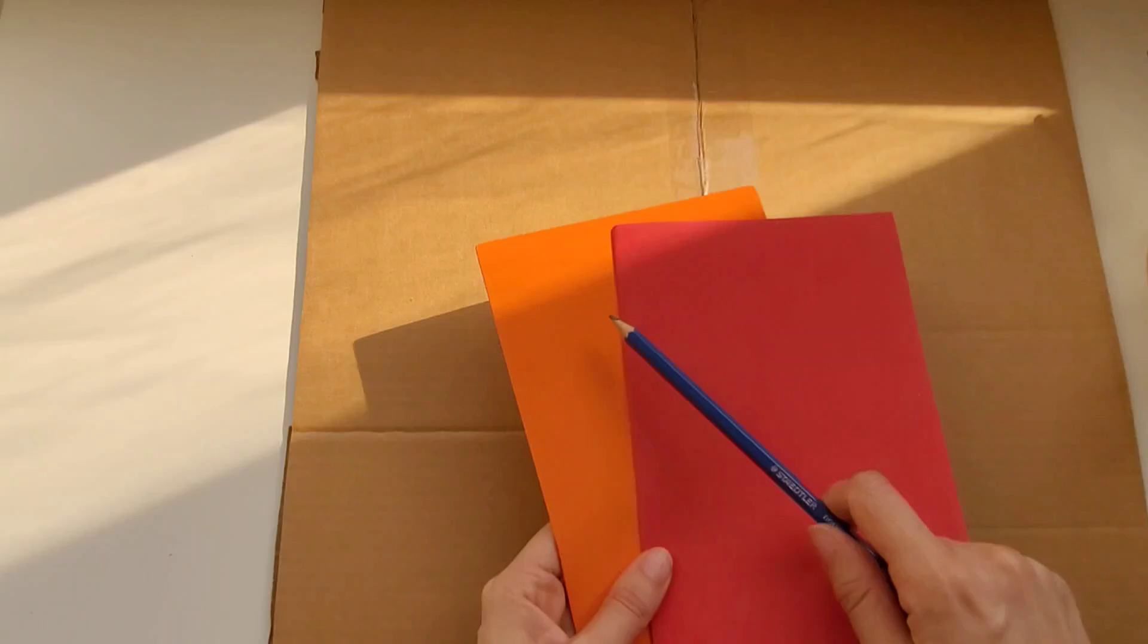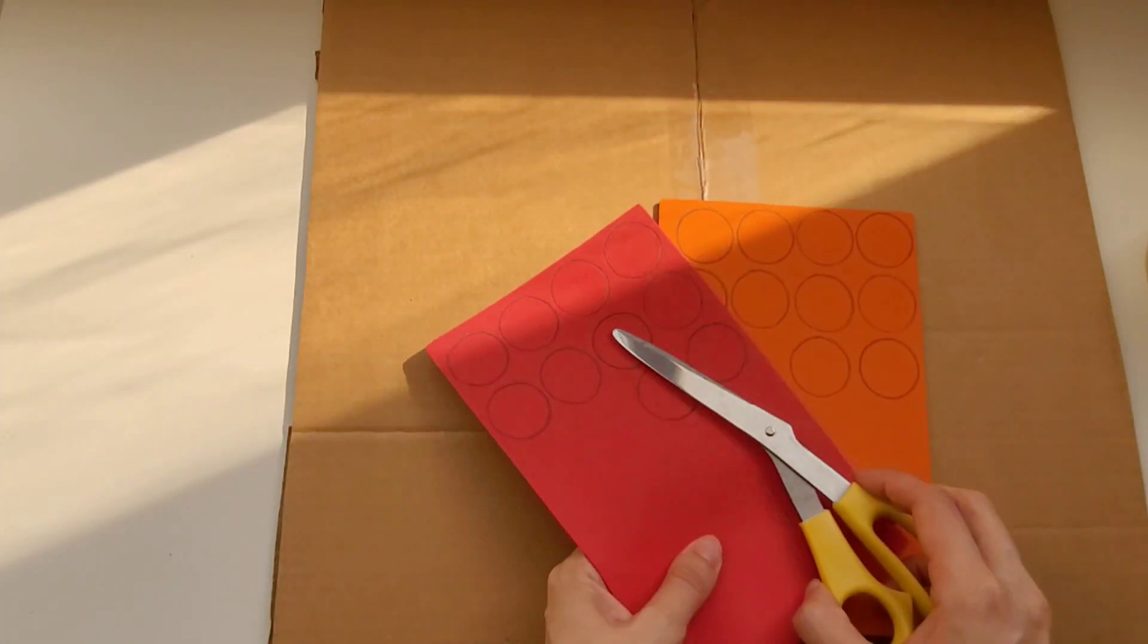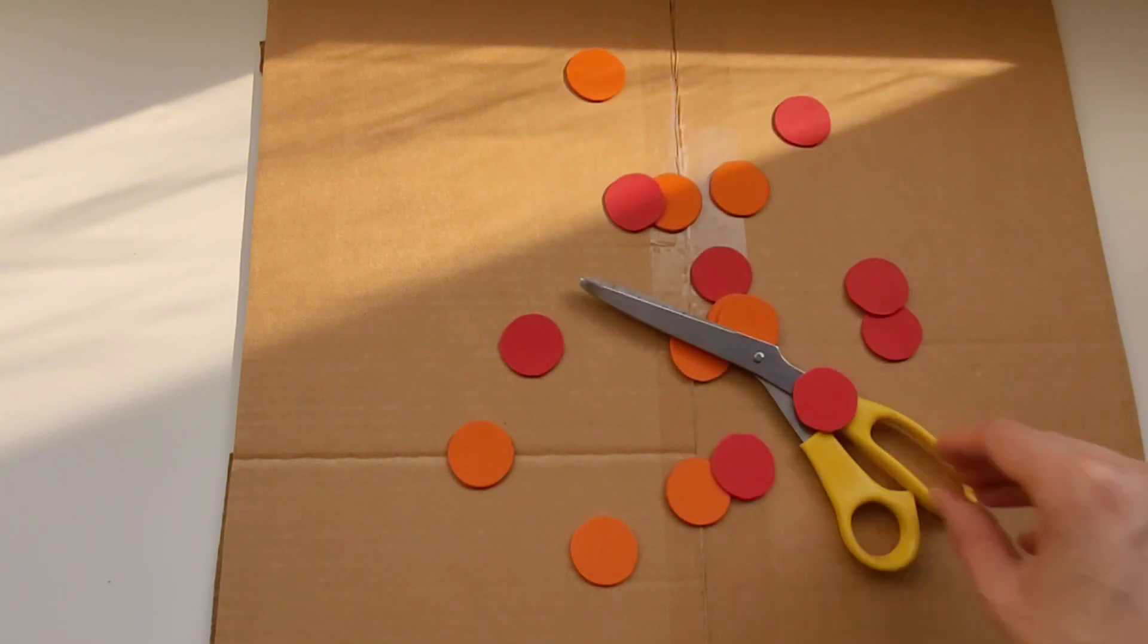Then we need some foam paper. I'm going to start out with orange and red which I will cut into little circles. These little circles are going to be my tens.